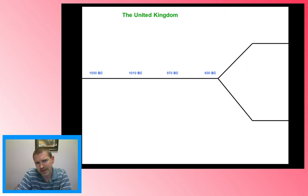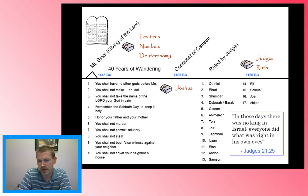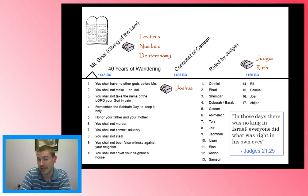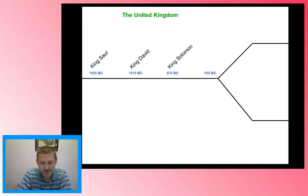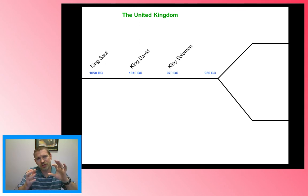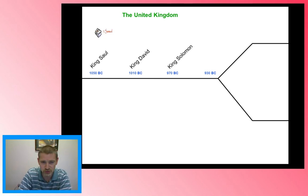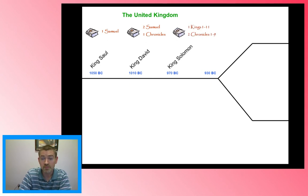Then we get to what's called the United Kingdom. One of the last judges, number 15, is Samuel. Samuel's two sons Joel and Abijah are listed as judges, but Samuel is the last great judge. During Samuel's time, the people asked him to appoint a king. God says go ahead and do it. The first king appointed is King Saul, who didn't work out so well, so God dethroned his family and put King David on the throne. King Solomon then was the son of David. During this time of these three kings, the Israelite nation is united — all 12 tribes together under one king. King Saul's reign is in 1 Samuel. David's reign is in 2 Samuel and 1 Chronicles. King Solomon's reign is at the beginning of 1 Kings and 2 Chronicles.